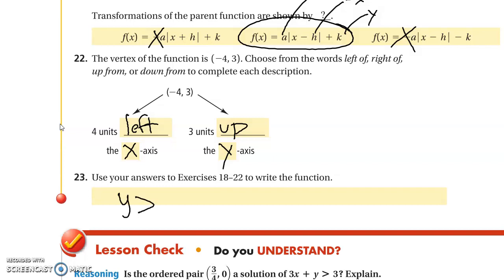Y is greater than negative absolute value of x plus 4 plus 3. All right, that's it. Have a good day.